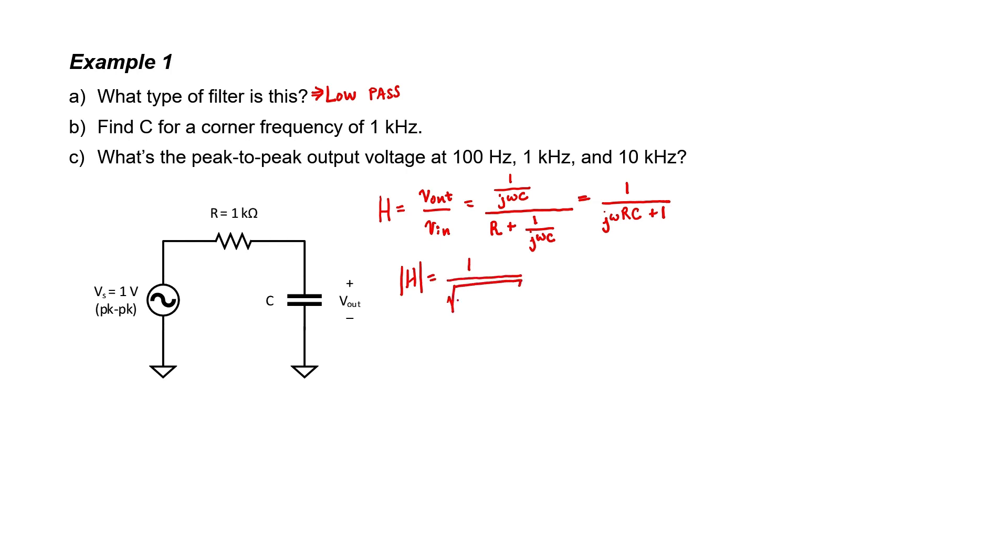We can use the Pythagorean theorem in both the numerator and the denominator in order to find the magnitude. If I make a plot of this transfer function's magnitude versus frequency, I'll find that it has the shape of a low-pass filter.